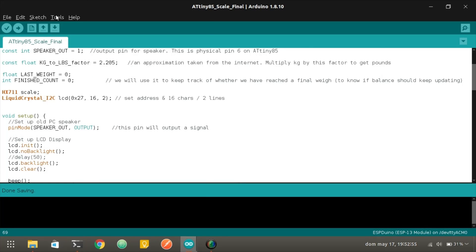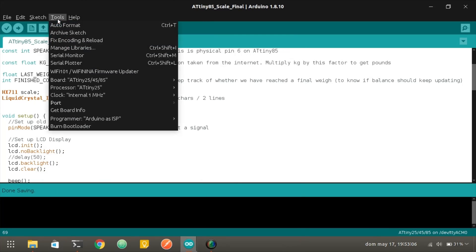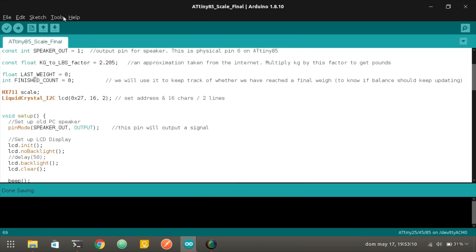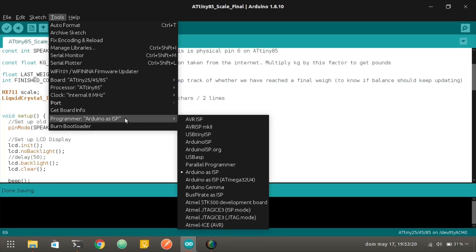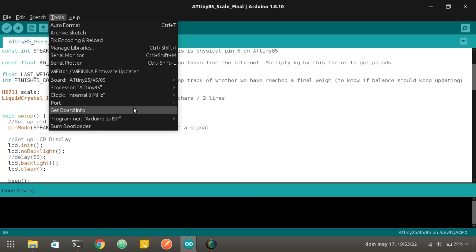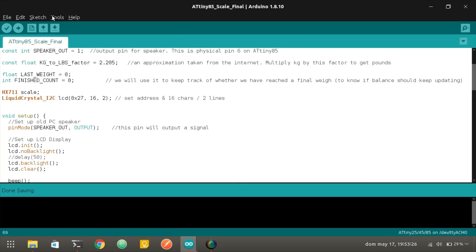Then, to upload your sketch, you have to go to Tools and select the correct board and processor. Mine is an ATtiny85 with an internal clock of 8 megahertz. Then, under Programmer, select Arduino as ISP. However, you need to prepare the Arduino Uno beforehand for that step. I'm assuming you already know how to do that, but just in case, I'll provide some links to resources for that. And in case you want me to do a video explaining it, just mention it in the comments.